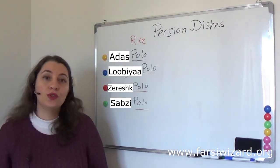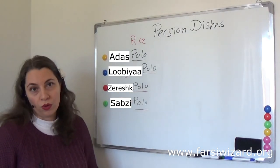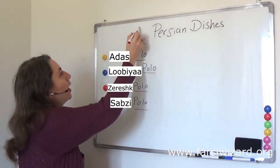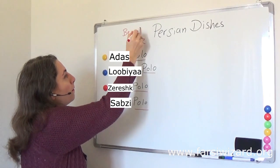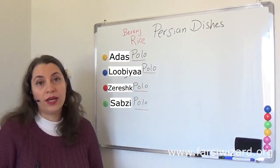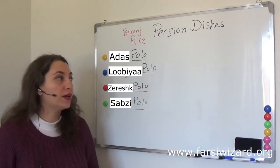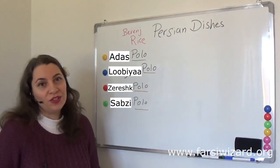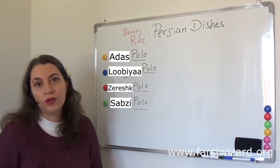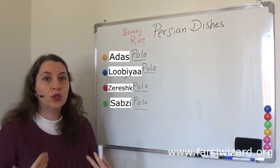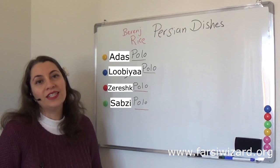So if you go to the store and you want to buy rice, you would not use the word polo. There's another word — the uncooked rice is called berenge. Berenge is the uncooked rice; this is what you will ask for in a store. But if you go to a Persian restaurant and you're looking at the menu, this is what you will see: polo. So polo is cooked rice.